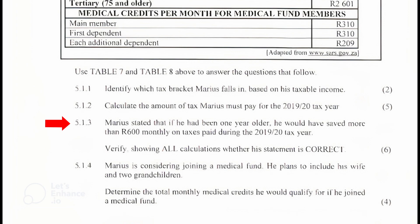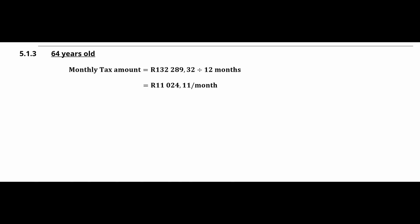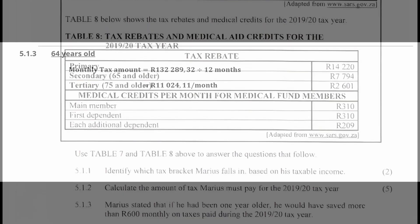Question 5.1.3: Marius stated that if he had been one year older, he would have saved more than R600 per month on his taxes. We need to verify whether his statement is correct. From question 5.1.2, as a 64-year-old, his annual tax was R132,289.32, so his monthly tax obligation is R132,289.32 ÷ 12 = R11,024.11 per month.